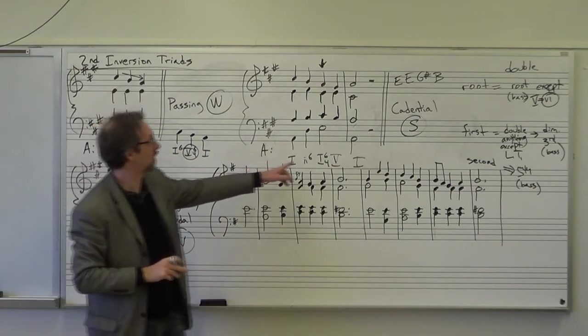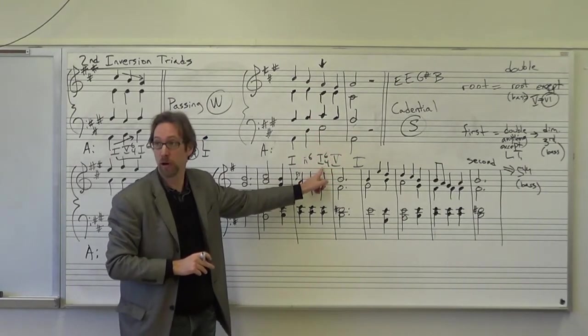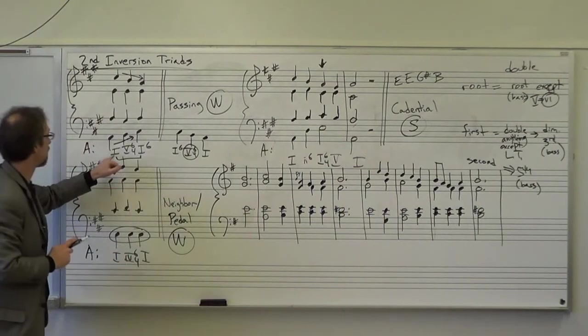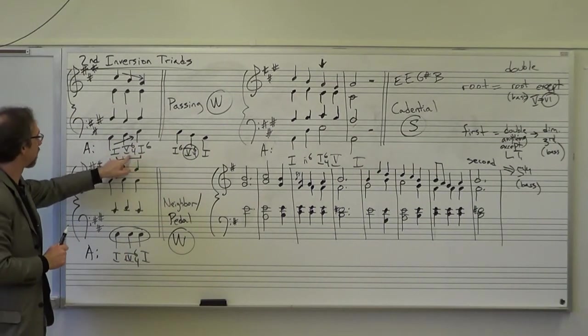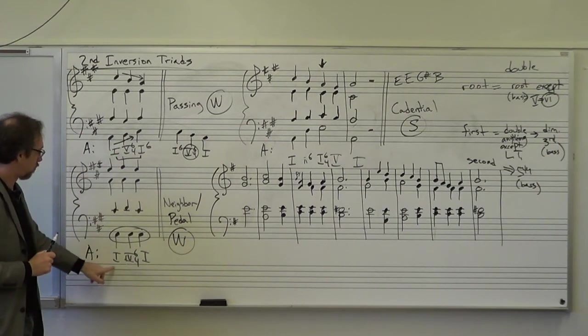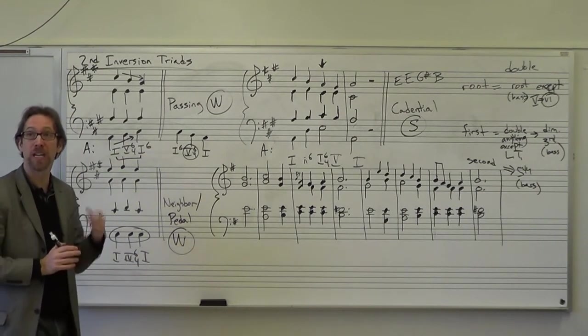So, cadential 6-4, 1-6-4 and a 5. Has to be on a strong beat. Passing 6-4, 1-5-6-4, 1-6, 1-6-5-6-4-1. Pedal, 1-4-6-4-1. Those are your three different types.